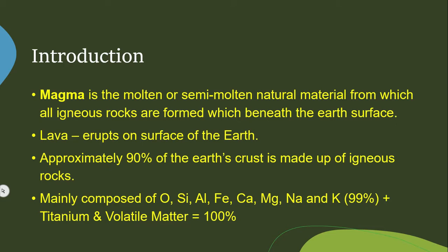Now we will discuss Magma in detail. Magma is a molten or semi-molten natural material from which Igneous Rocks are formed, which is beneath the earth's surface. Basically, Magma is a molten or semi-molten rock material. When the same molten rock material comes to the ground surface — when it erupts — that is called Lava. Suppose this is a volcano and this is a magma chamber from which magma is coming out.